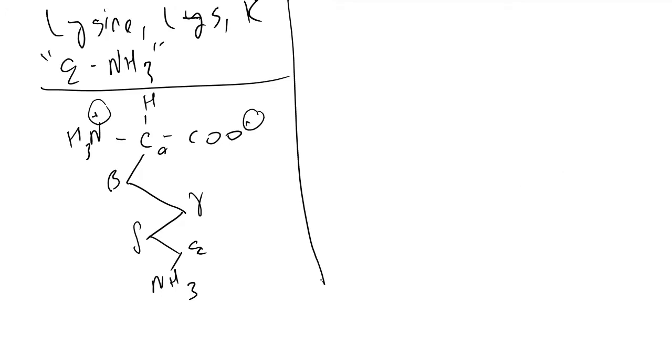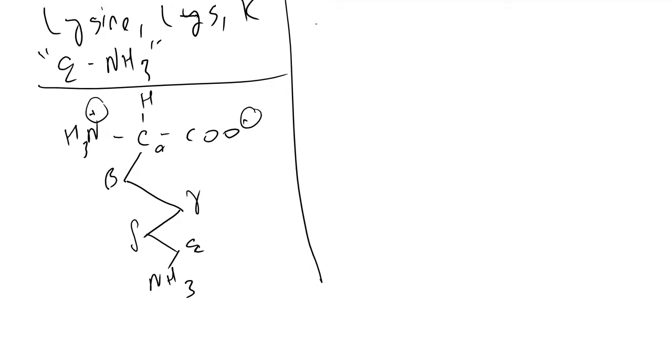To give another example, let's look at methionine. We have methionine, three-letter code MET, one-letter code M. And the way I remember it is: we've got gamma, a sulfur, and then a methyl group. A methyl group is a CH3 group.